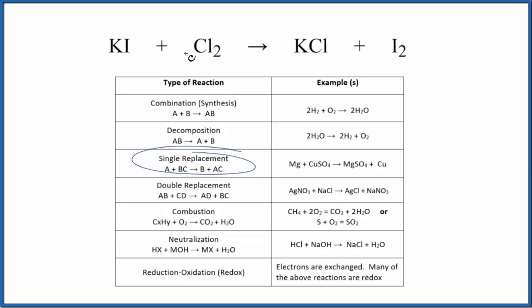So in that case, the chlorine would come in and it would push the iodine out. So the iodine now would be just I2 by itself. The chlorine would bond with the potassium, so we'd have KCl over here. That's our single displacement reaction.